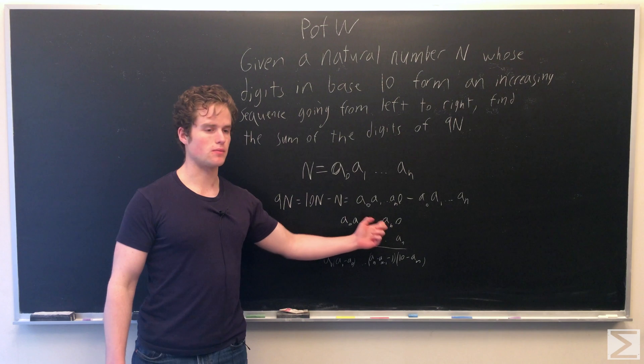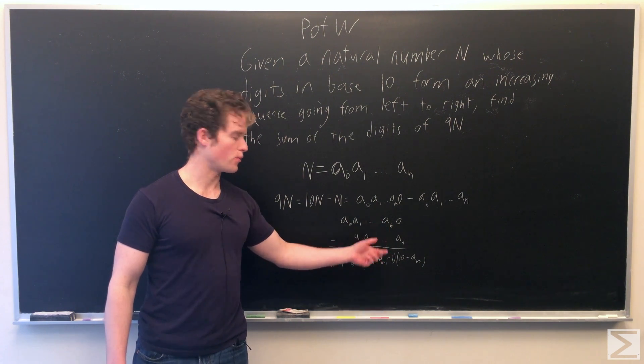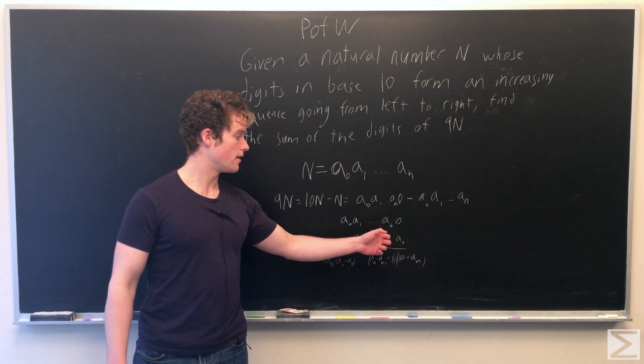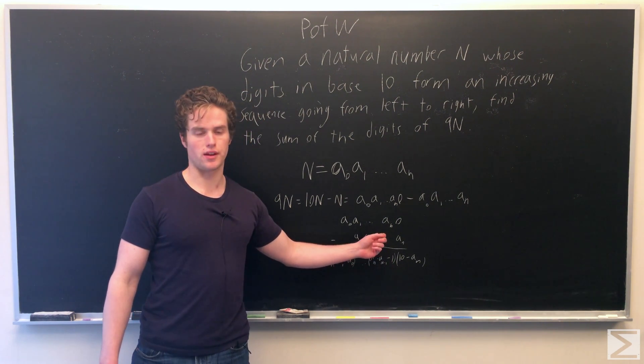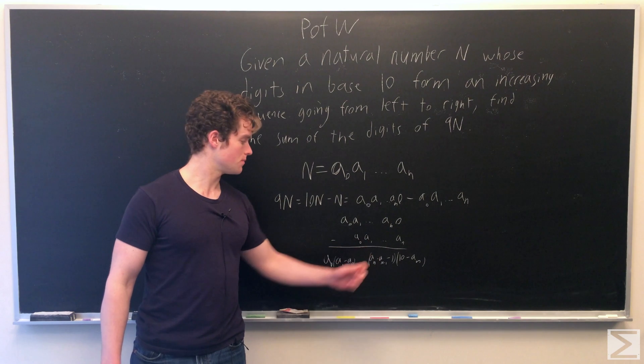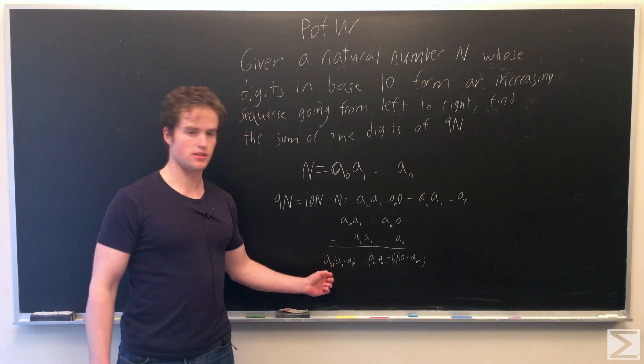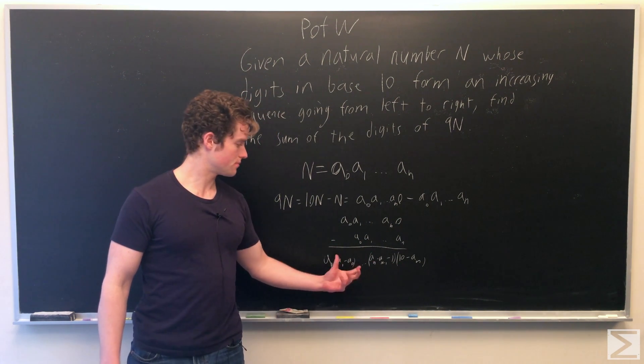So we take away a 1 here, but since we have it so it is increasing, an minus an-1 is at least 1, so this is at least 0, so we do not have to take a 1 from the next digit. So the rest of these just become a0, a1 minus a0, etc.